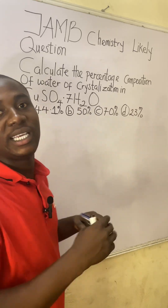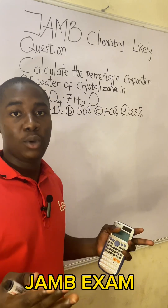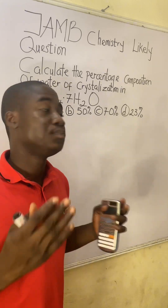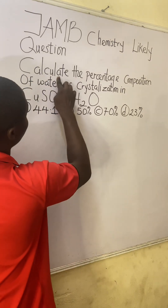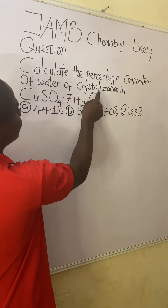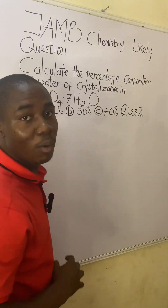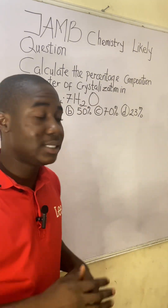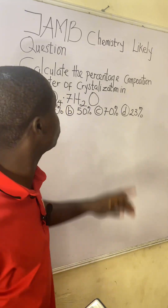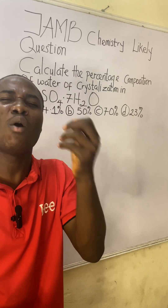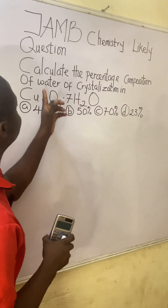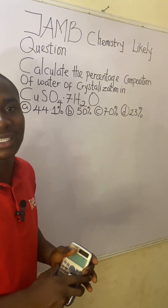If you came across this question in the JAMB exam, here is how to solve it — it's actually very easy. The question says: calculate the percentage composition of water of crystallization in this compound. They are asking us to calculate the percentage composition of something specifically in this compound, and it is water of crystallization.